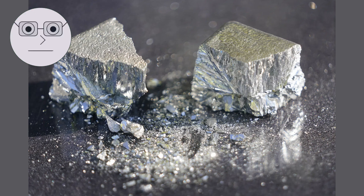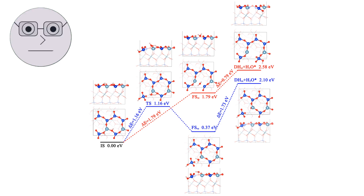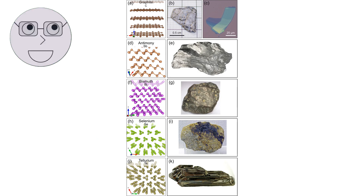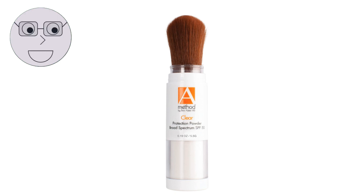Minerals are made up of atoms, which are the building blocks of matter. The atoms in minerals are arranged in a specific pattern, which gives each mineral its unique properties. These properties include colour, hardness and lustre.